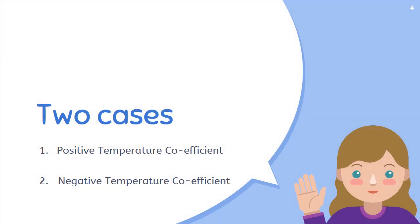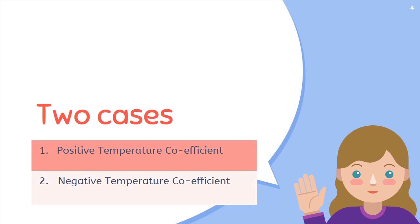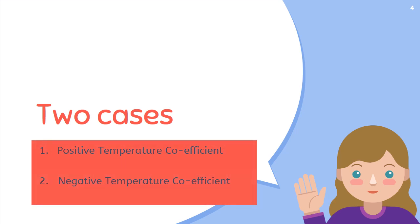There are two cases to discuss. One: when we increase the temperature and resistance also increases, the temperature coefficient of those materials is called positive temperature coefficient — for example, conductors. Two: when we increase the temperature and resistance decreases, those materials are called negative temperature coefficient — examples are semiconductors and insulators.